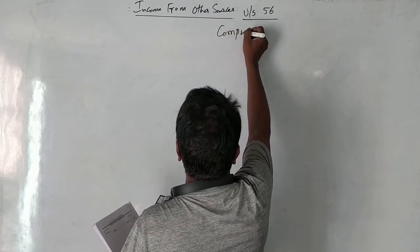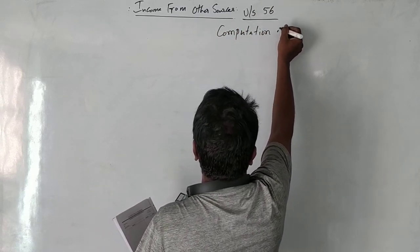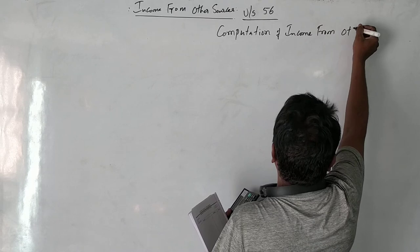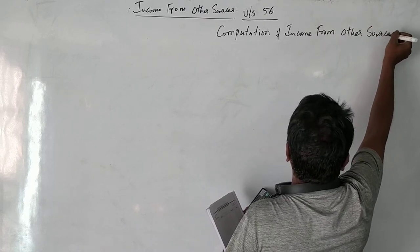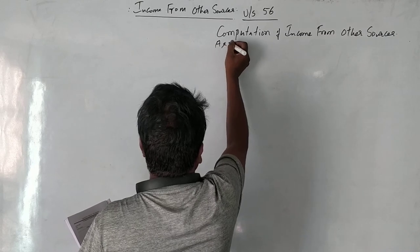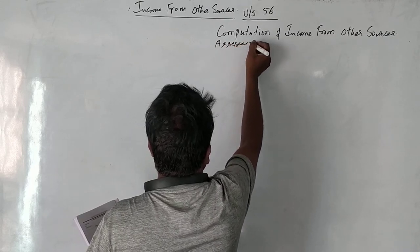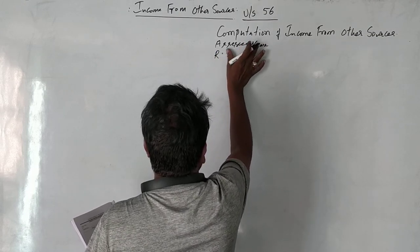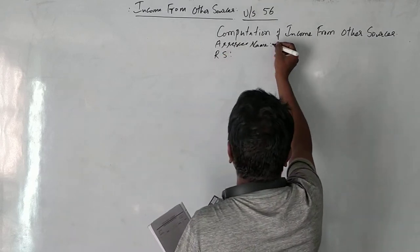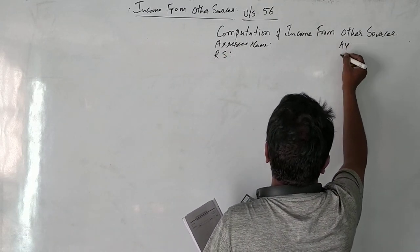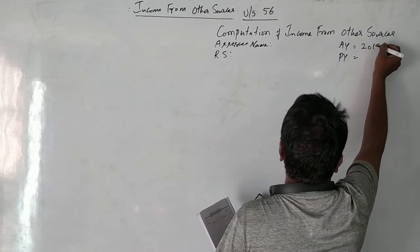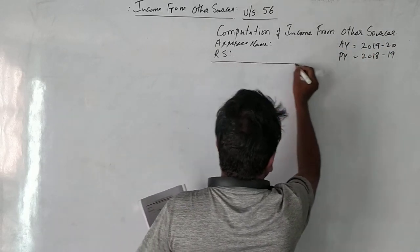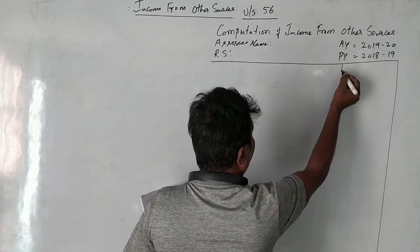Computation of income from other sources. We need to note the assessee, residential status, assessment year, and previous year. Assessment year is 2019-20 and previous year is 2018-19. This should be your format for solving a question.